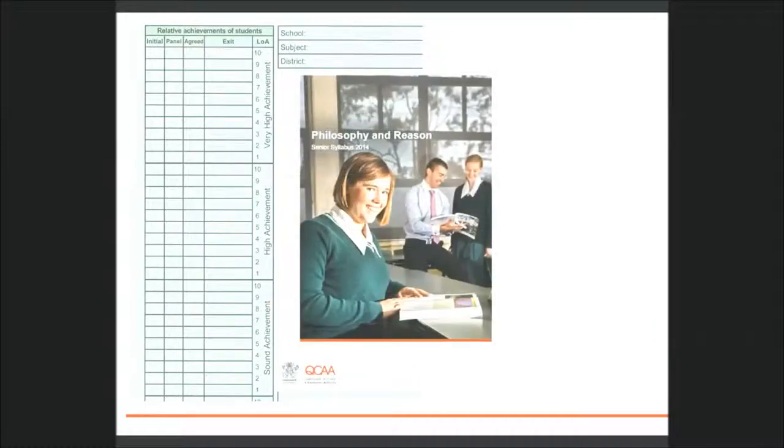Schools record their decisions about student achievement on the form R6. Making these decisions involves using all of the evidence in a student folio to determine a level of achievement in accordance with the syllabus requirements, and a fine-grained relative achievement decision in relation to the standards descriptors in the syllabus.